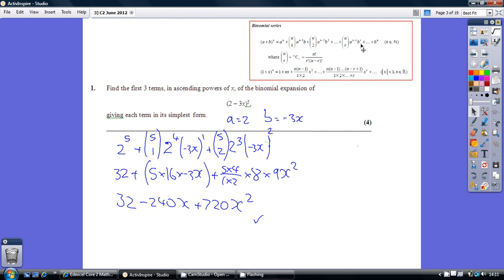So just substituting straight into the given formula, we've been asked for the first three terms, so we have 2 to the power of 5, 5 choose 1, 2 to the 4, and 1 lot of minus 3x.